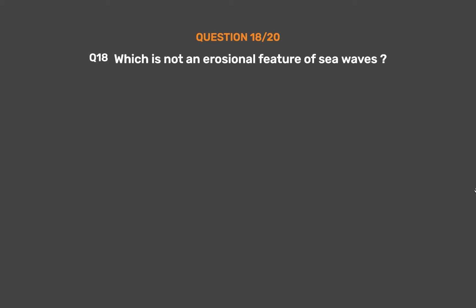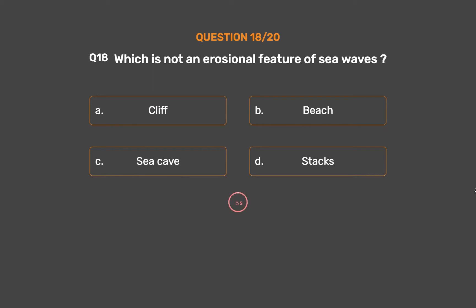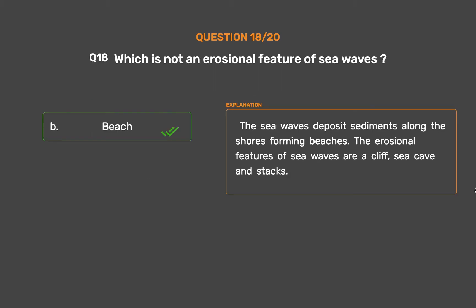Question No. 18: Which is not an erosional feature of sea waves? Option A: Cliff. Option B: Beach. Option C: Sea cave. Option D: Stacks. The correct answer is Option B: Beach. The sea waves deposit sediments along the shores forming beaches. The erosional features of sea waves are cliff, sea cave, and stacks.